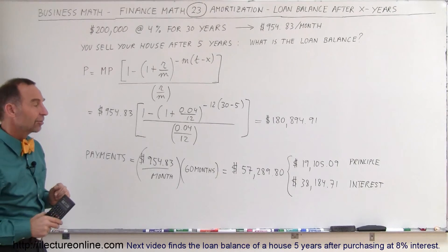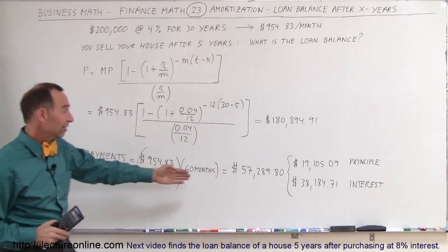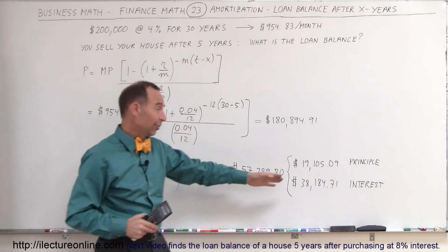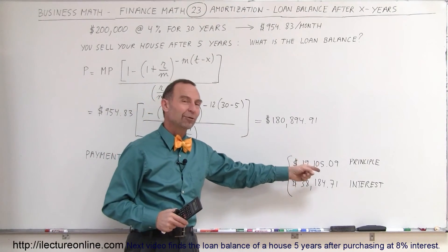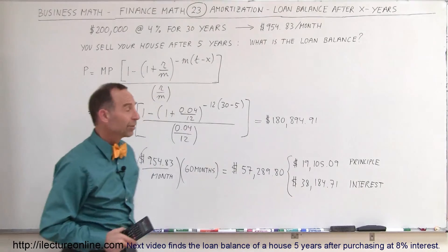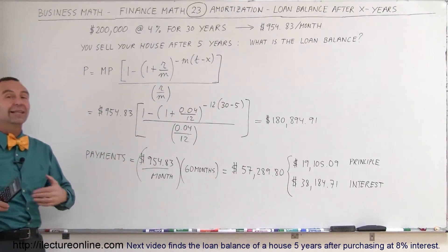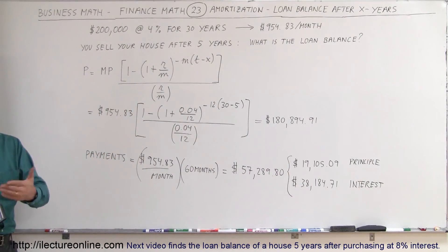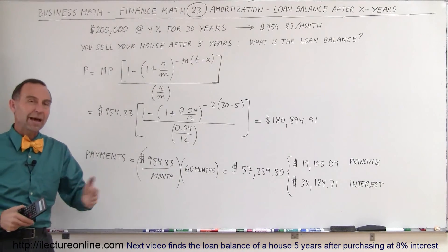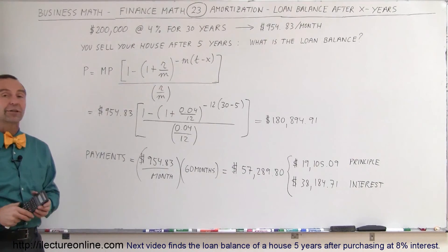We'll see that in our next example. But nevertheless, of the $57,000 you paid, only $19,000 went to paying off the loan, and two-thirds of that payment went to interest. So you see that the initial payments you make on a house are primarily interest payments, not so much payments to pay back the principal. And that's how we figured it out.